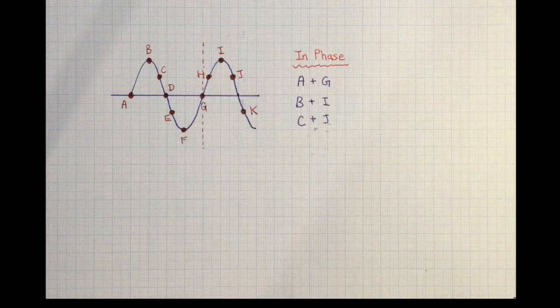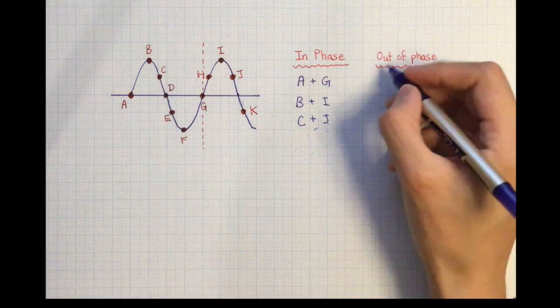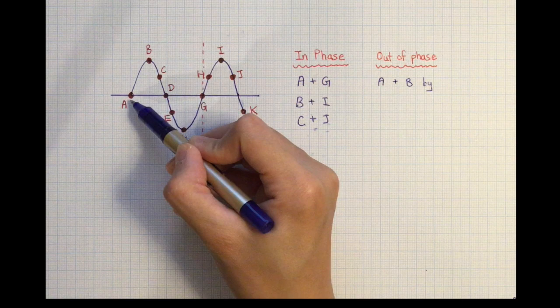Since position A is 0 degrees and position B is 90 degrees, A and B are out of phase by 90 degrees.